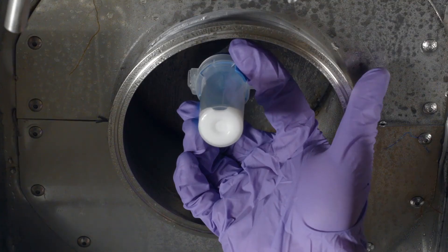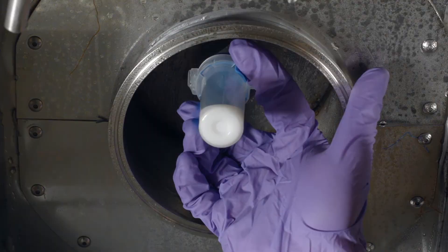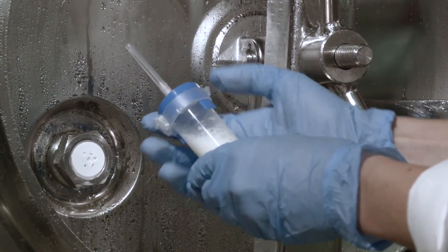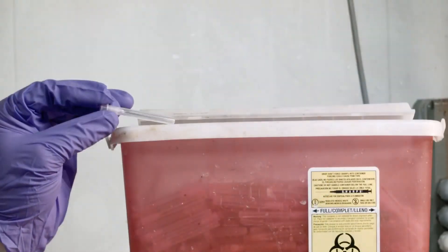Once your sample has been collected, withdraw the needle from the septum. Place the safety cover on the needle, remove the needle, and discard it in a sharps container.